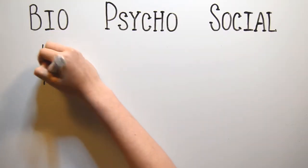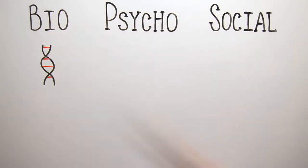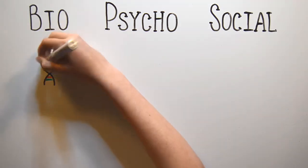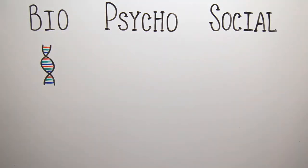For example, from a biological perspective, certain combinations of genes can put someone at a higher risk for developing anorexia. Genes are something you're born with, so you can't choose to be at risk for anorexia any more than you can choose what colour your eyes are.